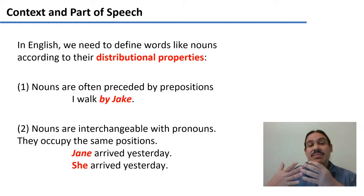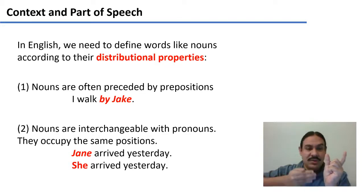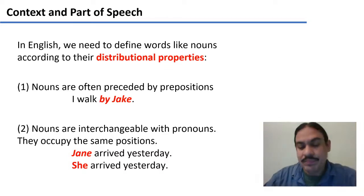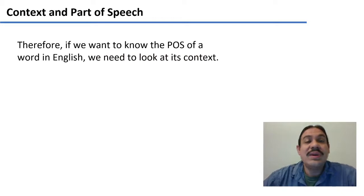So in summary, in languages like English and Cook Islands Maori, we can only really define nouns according to the distributional properties. For example, nouns can be preceded by prepositions like by Jake. If we have the word by, what comes after that is probably going to be a noun. Nouns are going to share properties with things like pronouns. Jane arrived yesterday is a sentence where we can replace Jane with she arrived yesterday. So a noun is something that can occupy the same spot as a pronoun. So in English, and as we'll see in Cook Islands Maori, we do need to look at the context of a word if we want to know its part of speech.